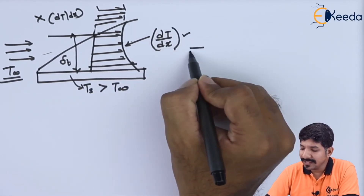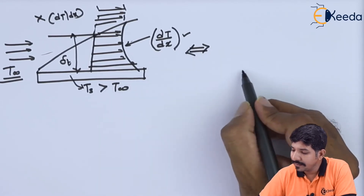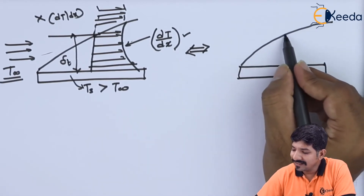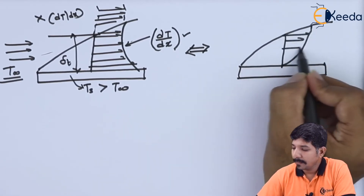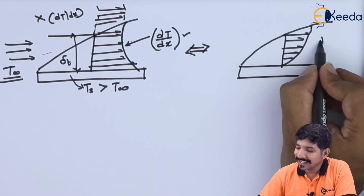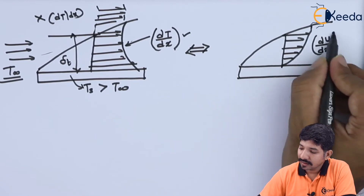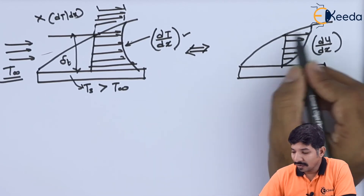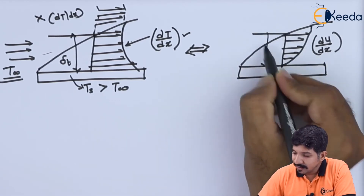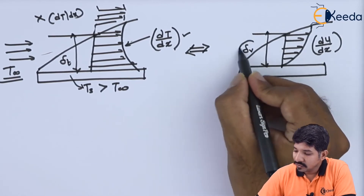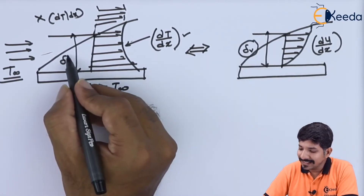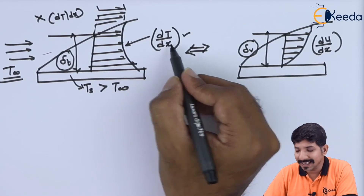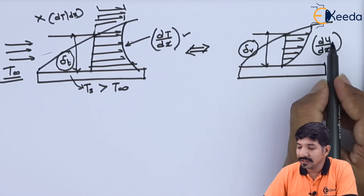This is very much analogous to the velocity boundary layer. In the case of a velocity boundary layer, the boundary layer exists because of the velocity gradient. This is delta V, the velocity boundary layer thickness, and delta T is the thermal boundary layer thickness. The thermal boundary layer thickness depends on dT/dy, and the velocity boundary layer thickness depends on dU/dy.